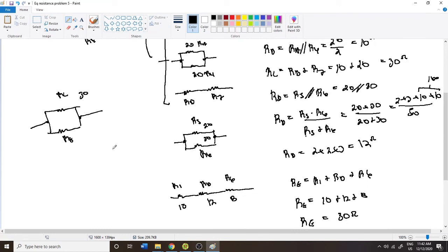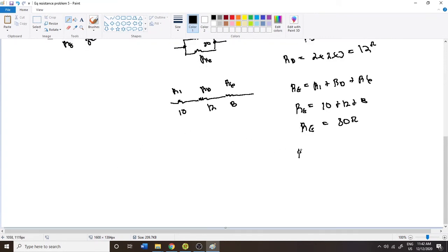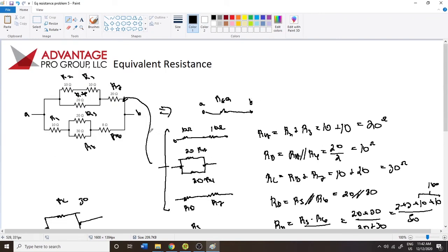30 ohms and oh look at that RE is also 30 ohms that makes our job very easy so now RF is equal to RC in parallel with RE which means that this is going to be RC over 2 since they are the same value which is equal to 30 divided by 2 which is equal to 15 ohms and that is your final result that's the equivalent resistance so REQ is equal to RF which is equal to 15 ohms.